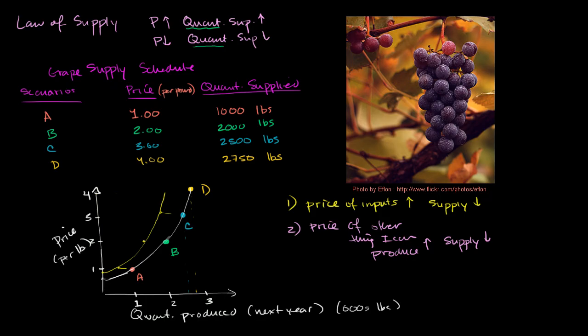Now let's think about what happens with the number of suppliers. This is pretty common sense—the more people supplying, the higher the supply would be. So if the number of suppliers goes up for this aggregate supply curve, then aggregate supply would go up at any given price point. If the number of suppliers were to go down, then aggregate supply would go down.